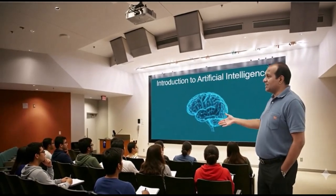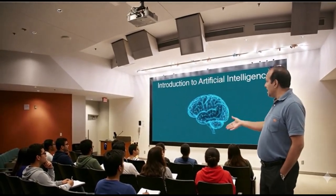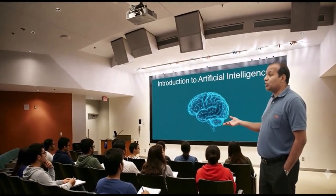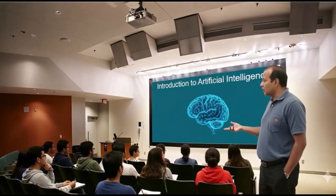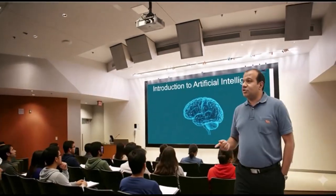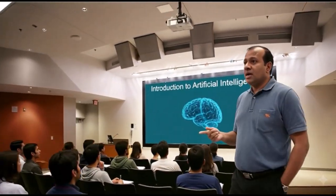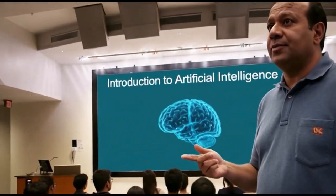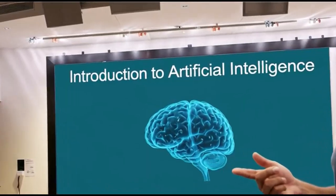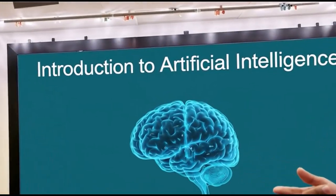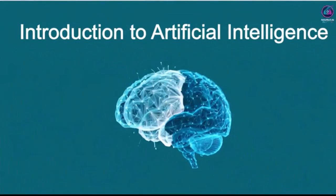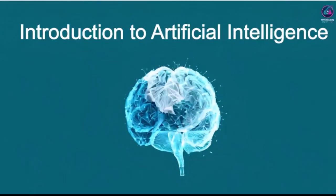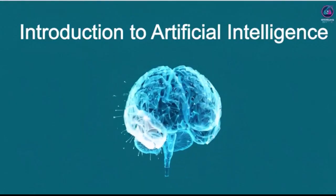Artificial intelligence, also known as AI, is a broad field of computer science focused on creating intelligent machines that can simulate human intelligence. Machine learning is a subfield of artificial intelligence.